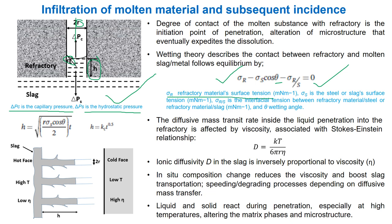This is the steel-slag interface. The degree of contact of the molten substance with the refractory is the initiation point of penetration. The alteration of microstructure eventually expedites the dissolution, and penetration depth and rate of penetration follow the equation.